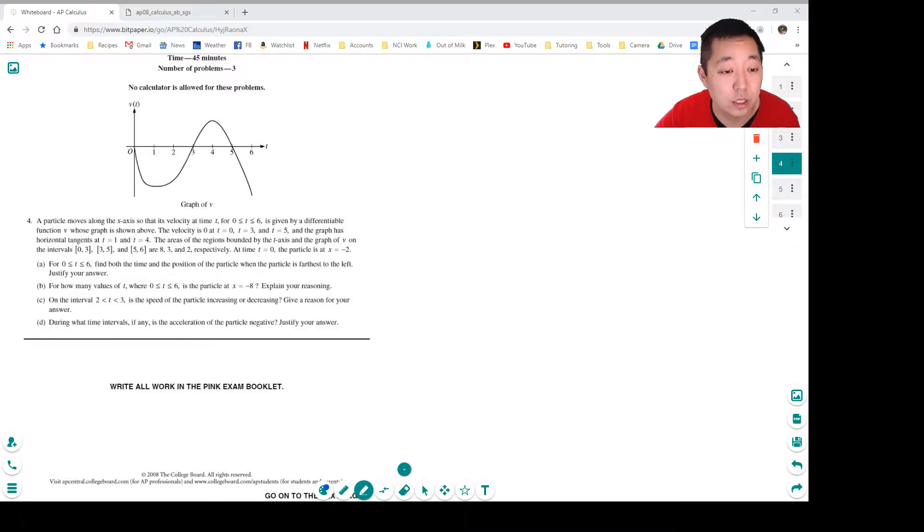The graph has horizontal tangents at t equals 1 and 4. The areas of regions bounded by the t-axis and the graph of v on intervals 0 to 3, 3 to 5, and 5 to 6 are given by the areas 8, 3, and 2 respectively. At time t equals 0 the particle is at x equals negative 2.